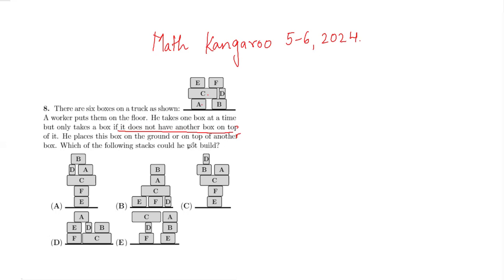Which of the following stacks could he not build? The question is asking which stack he cannot build. The condition we have here is he can take only one box at a time, and he can only take a box if it does not have another box on top.